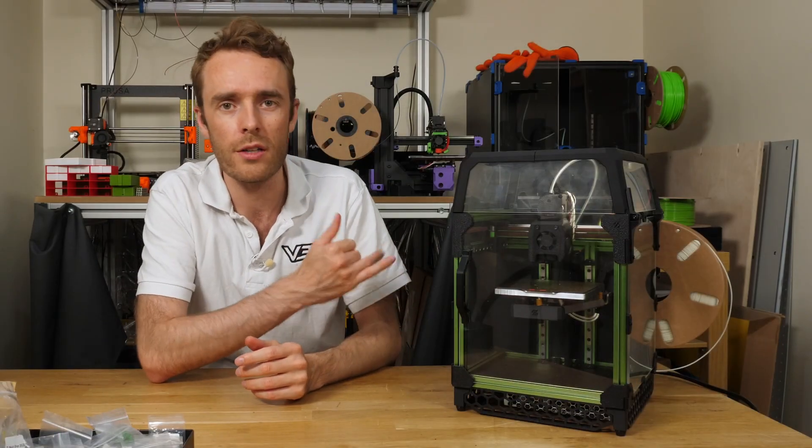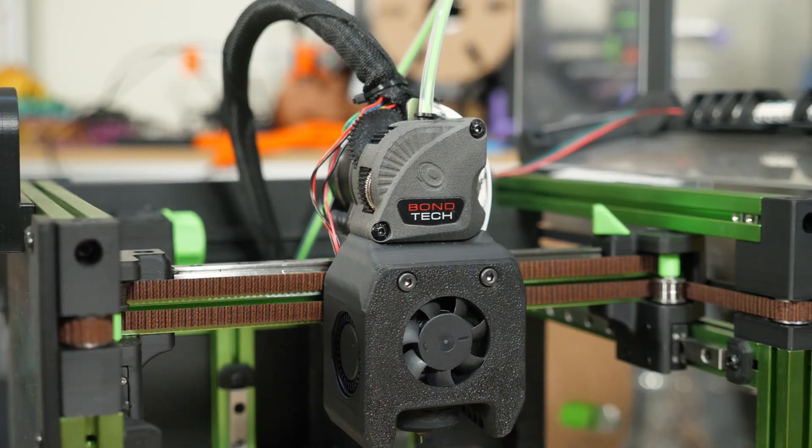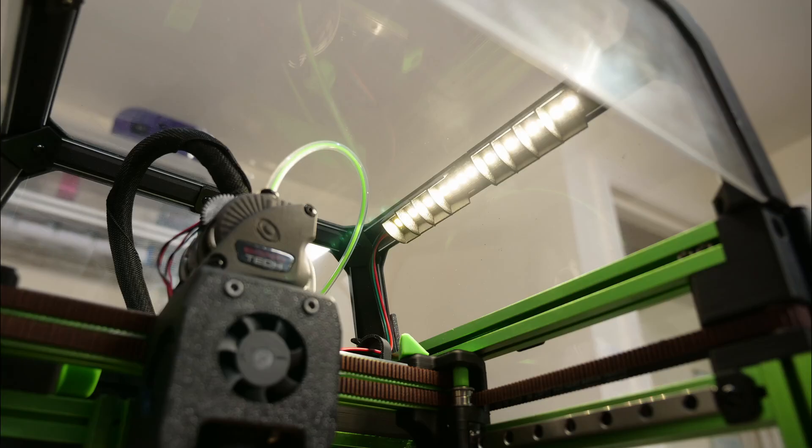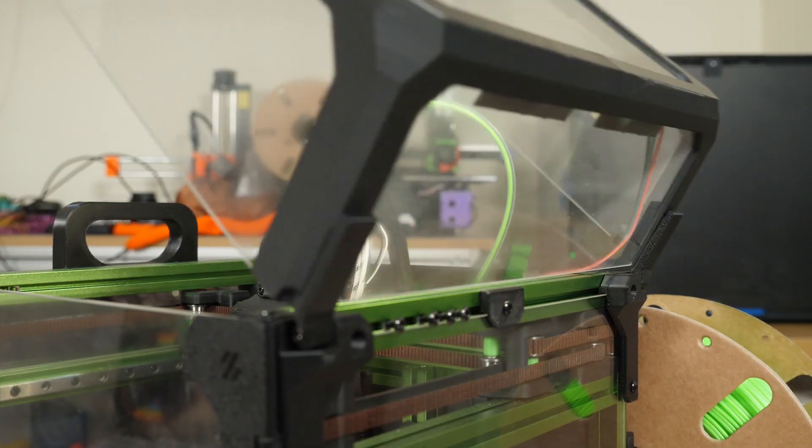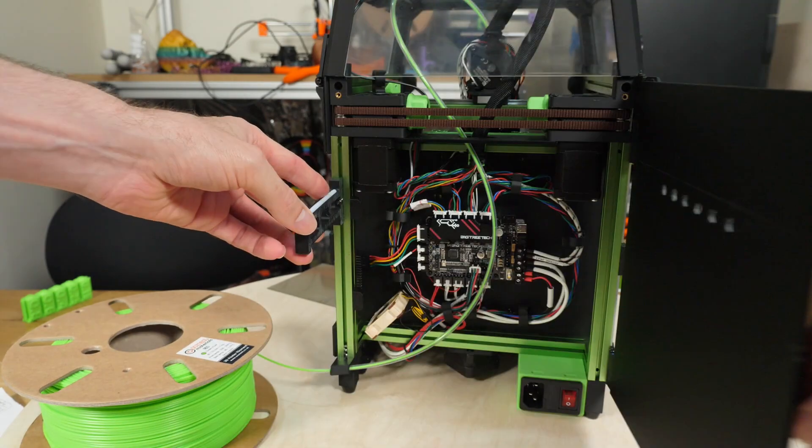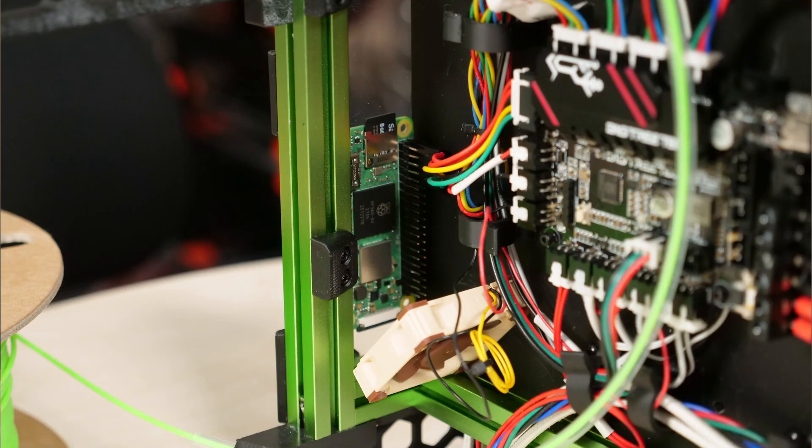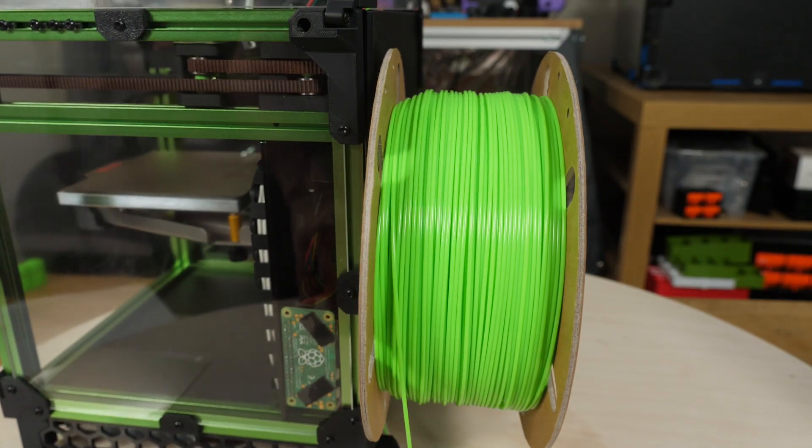Before I go any further, I should let you know that my V0 is quite heavily modified. I've got the LGX Lite extruder, a Kirigami bed, internal lights, a top hat hinge, a rear door hinge, the BigTreeTech SKR Pico control board, an electronics cooling fan, and a modified spool holder and handle.